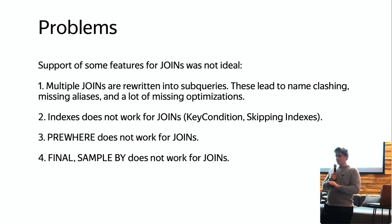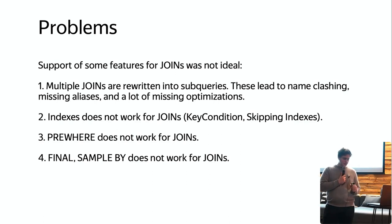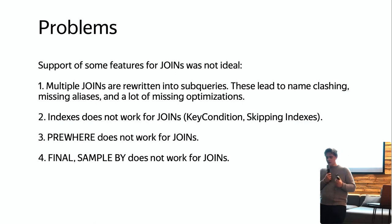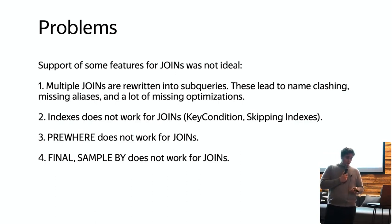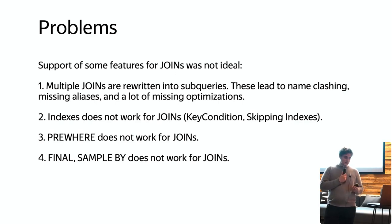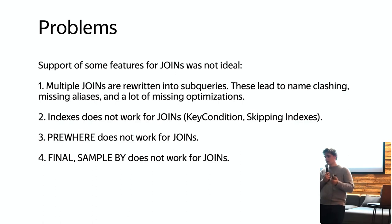There were a couple of problems with JOIN support in old architecture. Multiple JOINs were rewritten to subqueries, which was done a long time ago when it was really hard to implement JOINs properly, and many features were then piled on top of that architecture. This led to name clashing, missing aliases, and many missing optimizations. For example, primary key indexes and skipping indexes did not work for JOINs, and FINAL and SAMPLE BY also did not work for JOINs in some special cases.